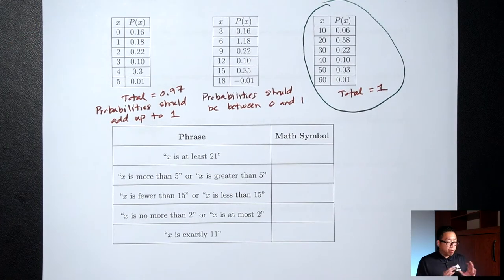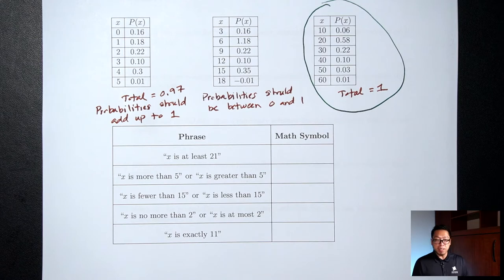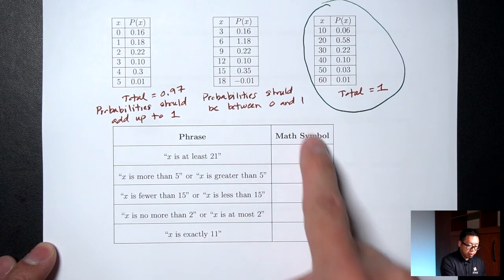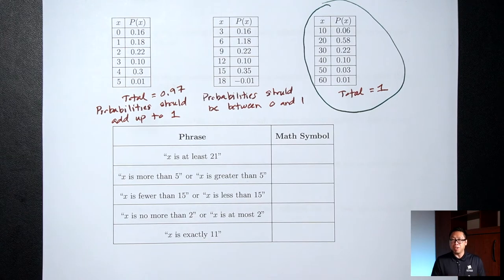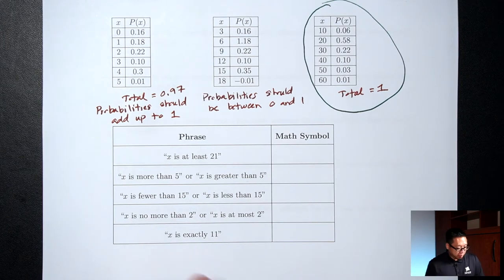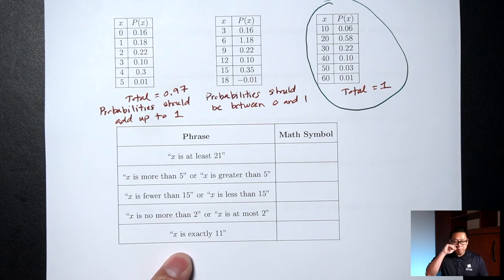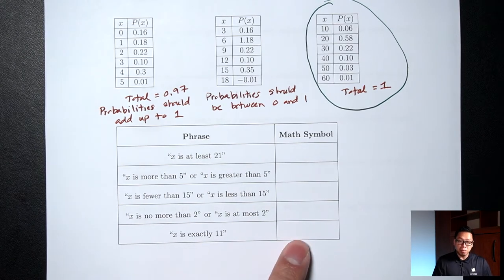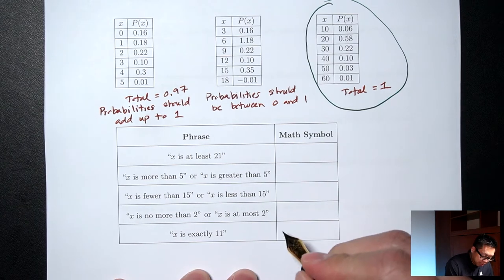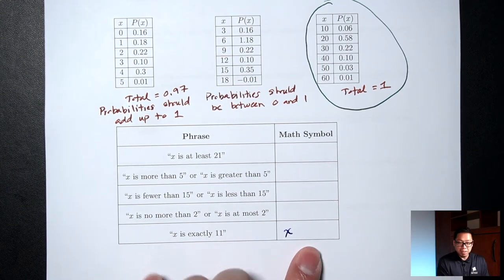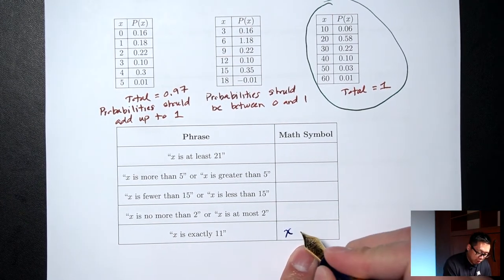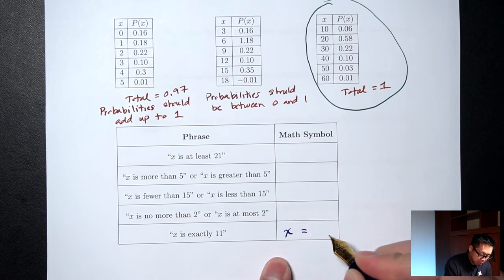Now I want to talk about some phrases we'll encounter over and over in this unit, and translate them to math symbols so we all agree on what they mean. The easiest one: 'X is exactly 11' translates to X = 11.